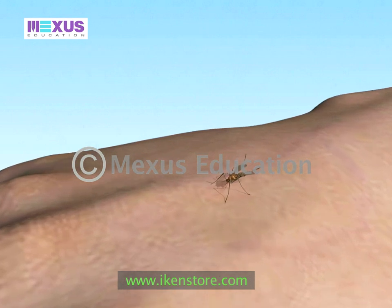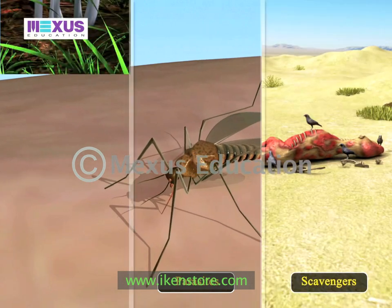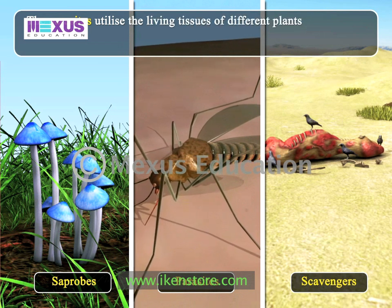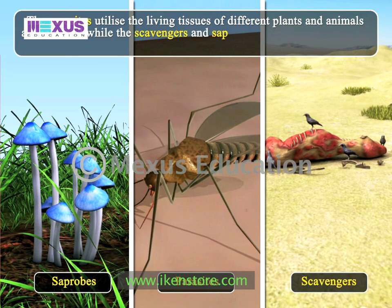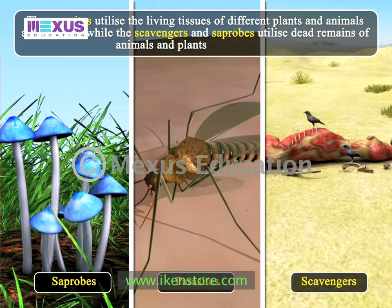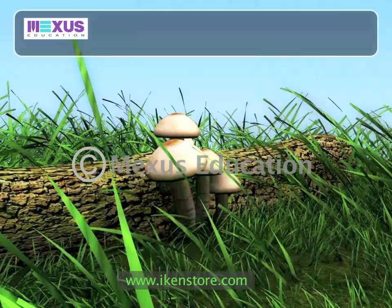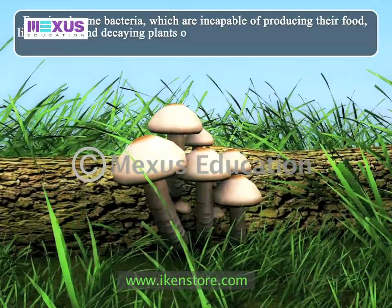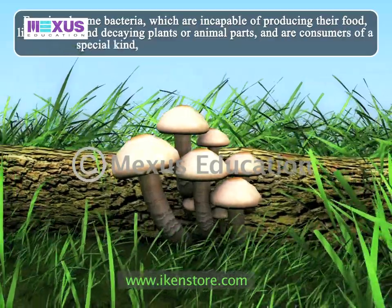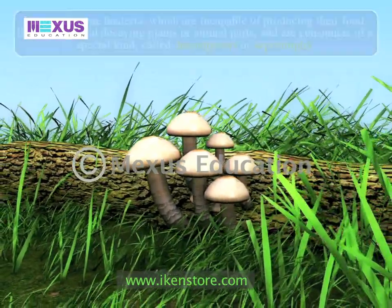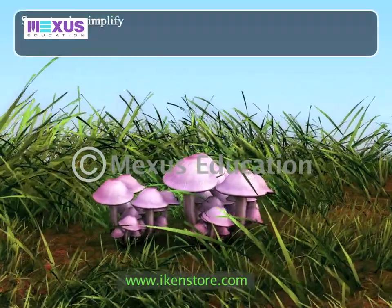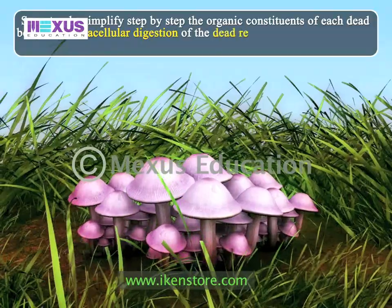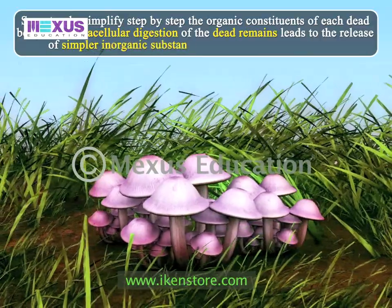Besides different categories of consumers, the parasites, scavengers and saprotrophs are also included among consumers. The parasites utilize the living tissues of different plants and animals as their food, while the scavengers and saprotrophs utilize dead remains of animals and plants as their food. Fungi and some bacteria, which are incapable of producing their food, live on dead and decaying plants or animal parts and are consumers of a special kind called decomposers or saprotrophs. Saprotrophs simplify step by step the organic constituents of each dead body. The extracellular digestion of the dead remains leads to the release of simpler inorganic substances which are then used as food.